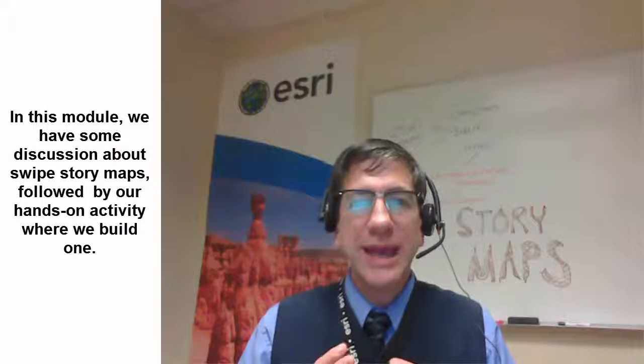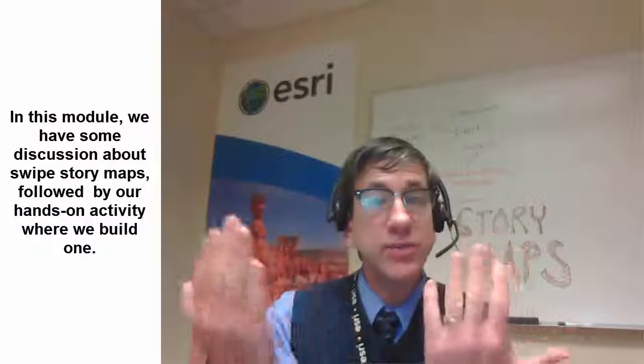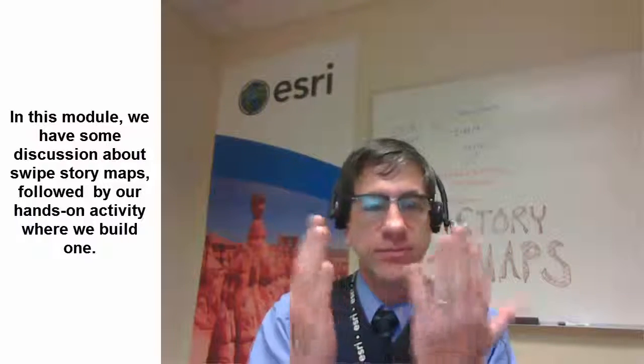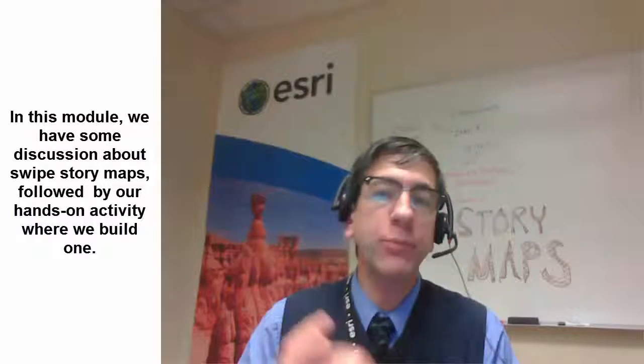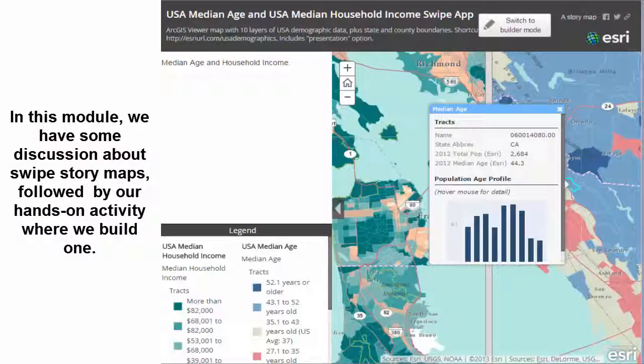In this module we have some discussion about swipe story maps. Swipe story maps are kind of like a squeegee, and on either side of that squeegee are two maps or one map with two different themes. For example, if it was one map with two different themes, it could be a median age versus a median income variable for the same geographic area.